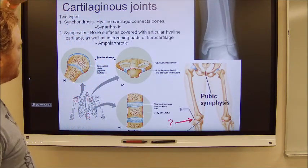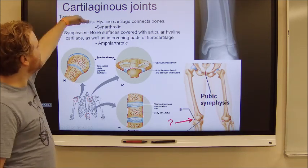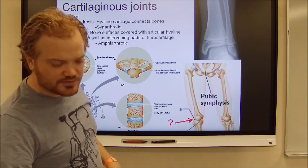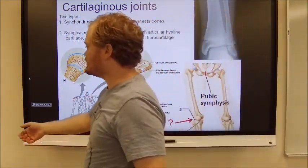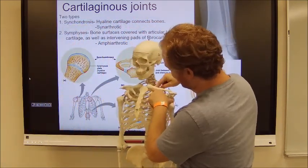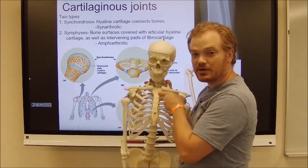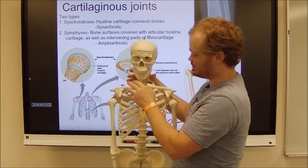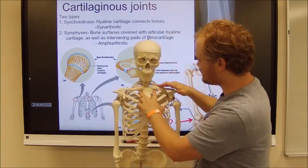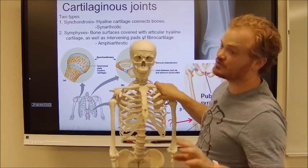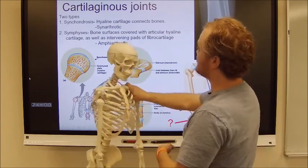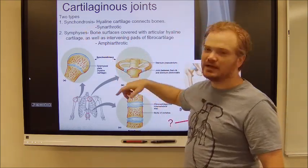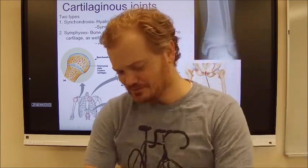Moving on to cartilaginous joints. There are two types: synchondroses and symphyses. The synchondroses use entirely hyaline cartilage. The classic synchondrosis is like here in the ribs — bone to cartilage to the manubrium of the sternum. That is a synchondrosis, an area where hyaline cartilage connects two bones together in a synarthrotic fashion. So these are cartilaginous joints, one type being a synchondrosis like in the rib — non-moving, synarthrotic.